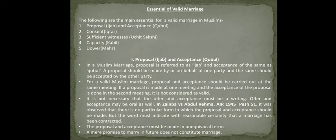There are five main essential elements for a valid Muslim marriage. The first is proposal and acceptance. In a Muslim marriage, proposal is referred to as 'Ijab' and acceptance of the same is called 'Qubul'. A proposal should be made by or on behalf of one party and accepted by the other party. For a valid Muslim marriage, proposal and acceptance should be carried out at the same meeting.